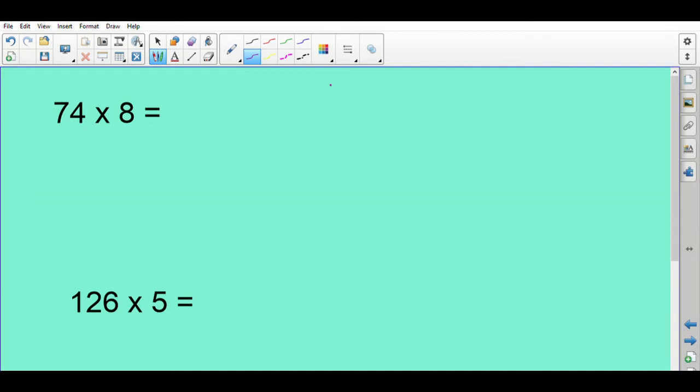74 times 8. So if you do these together. So 74 times 8. Put it together. 4 times 8 is 32. So remember, we do our unit times our unit first. So that's 32. Carry the 10 into the next column.